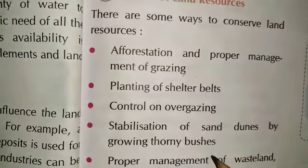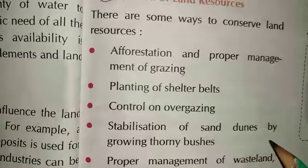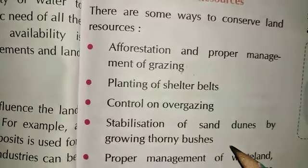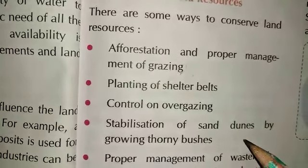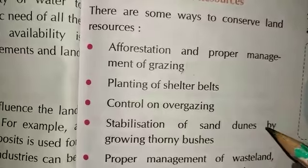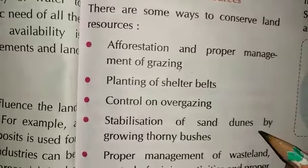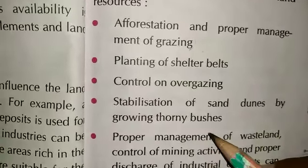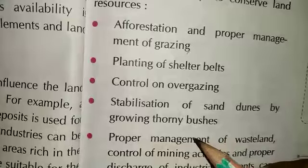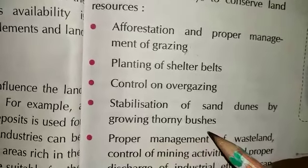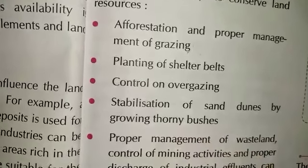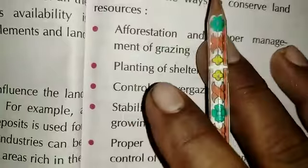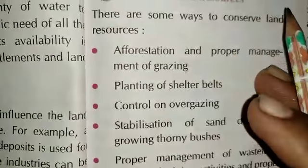Stabilizing sand dunes by growing thorn bushes. The sand dunes will be held to the ground, and the forest cover helps stabilize the ground. So this is the conservation of land resources.